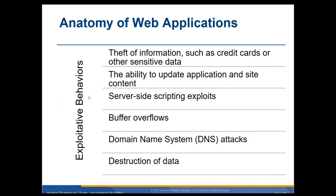Anatomy of web apps and exploitable behaviors include: theft of information such as credit card data, the ability to update applications and site content, server-side scripting exploits, buffer overflows, DNS attacks where you can redirect where DNS translates a hostname to an IP address, and the ability to destroy data.